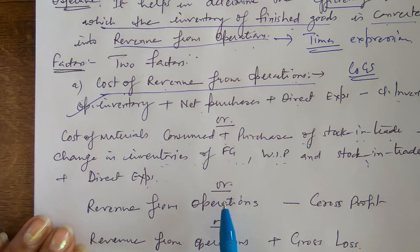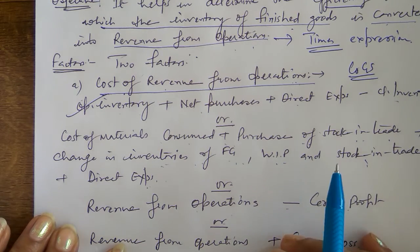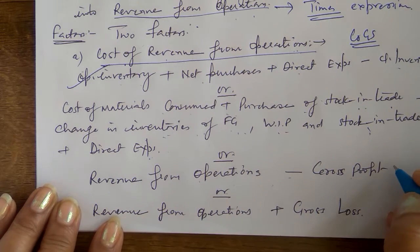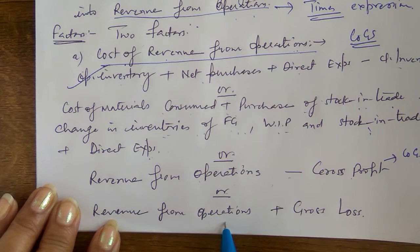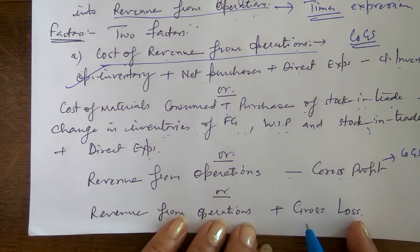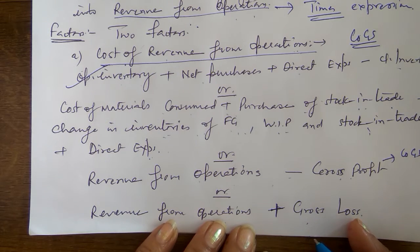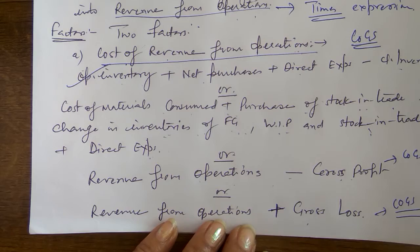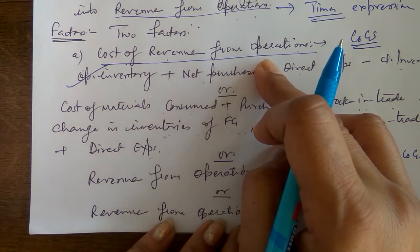So there are different ways to calculate cost of revenue from operations. Revenue from operations minus gross profit gives cost of revenue from operations. If gross loss is given instead of gross profit, then the cost of revenue from operation equals revenue from operations plus gross loss. The first factor is now clear.